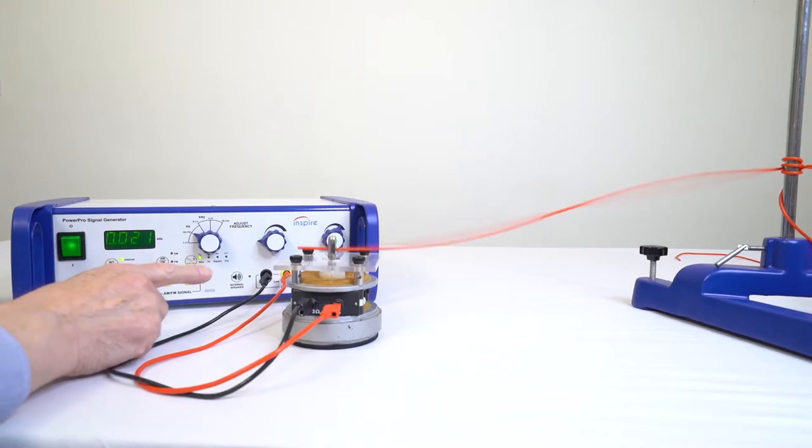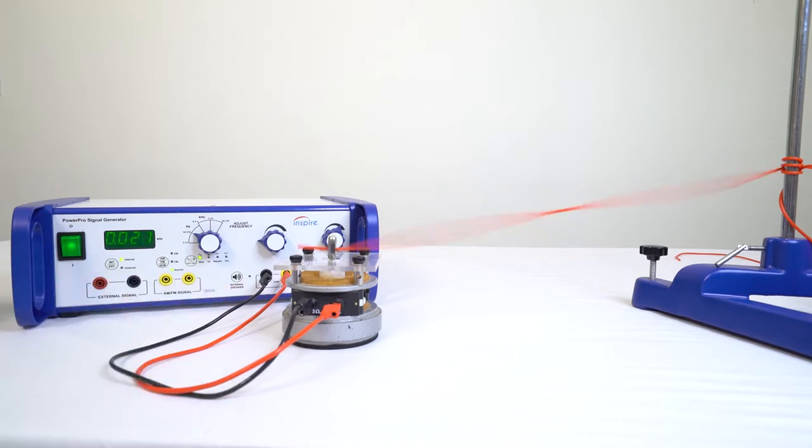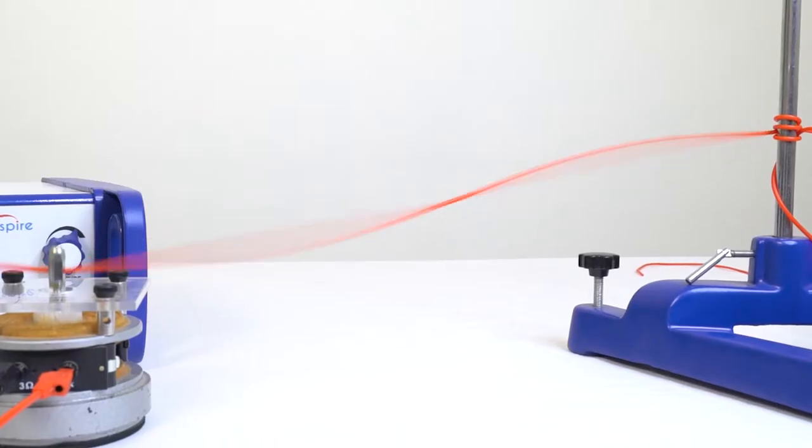The low impedance output provides powerful drive for the vibration generator. The vibration generator accessories kit supports a range of demonstrations of wave phenomena. A silicone rubber cord under light tension